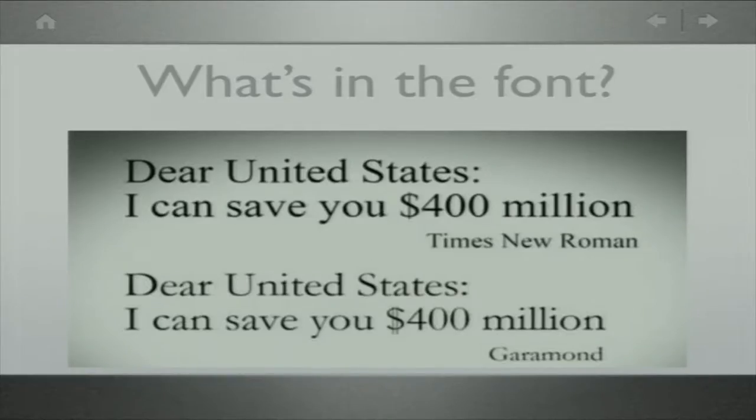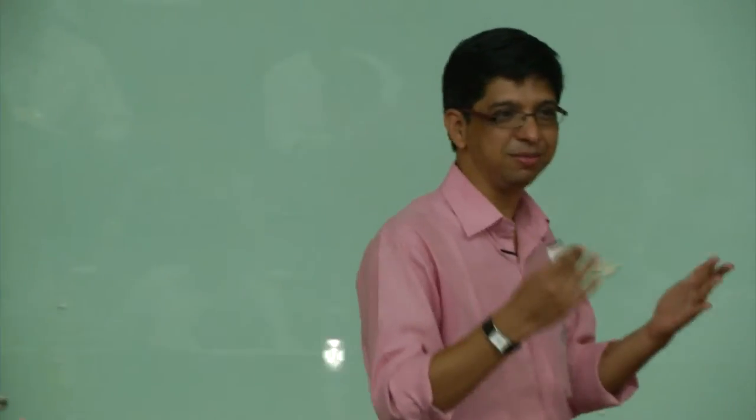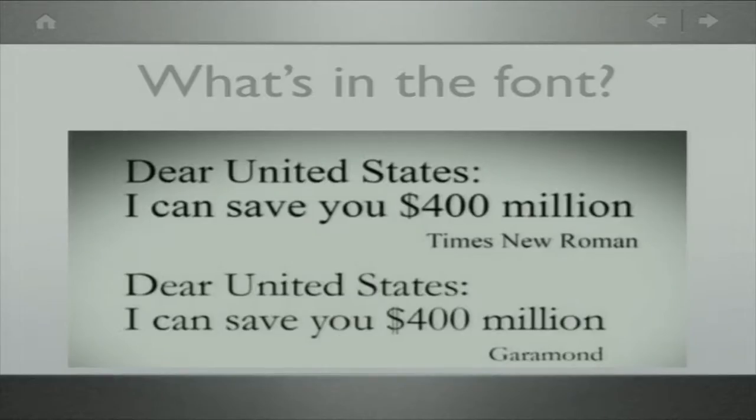A school boy of Indian origin in the US made a claim that you can save 400 million dollars if you change the official font of the United States from Times New Roman to Garamond. The idea was that since Garamond is a lighter and thinner font, the amount of ink used to print on paper would be so much less that they would save 400 billion dollars a year.